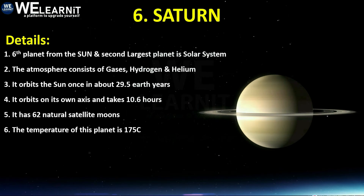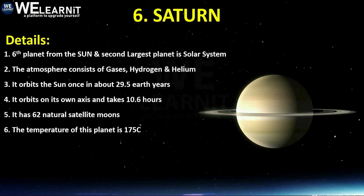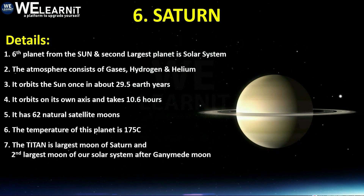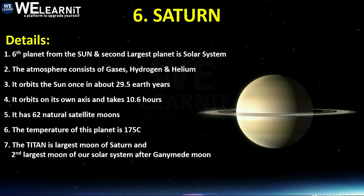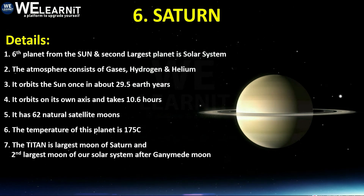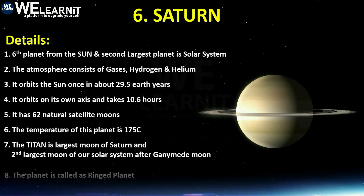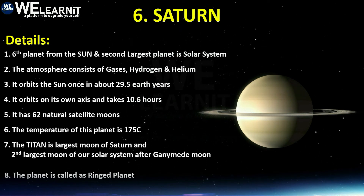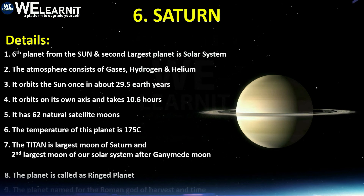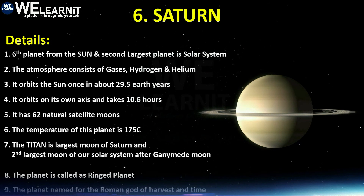The temperature of Saturn is minus 175 degrees Celsius. Titan is the largest moon of Saturn and the second largest moon in the solar system after Ganymede, which is the moon of Jupiter. Saturn is called the Ring Planet because of its beautiful rings. This planet is named for the Roman god of harvest and time.